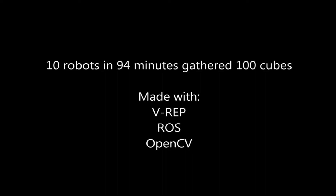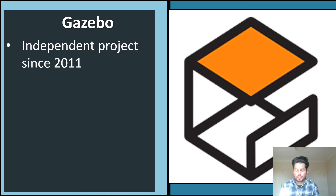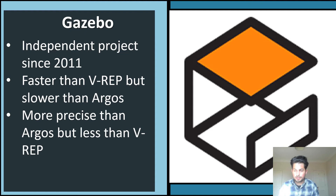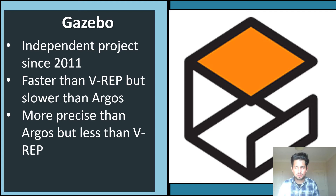The next simulator is Gazebo, an independent project developing since 2011. It is faster than VREP, a bit slower than Argos — somewhere in between — and more precise than Argos but less than VREP. This project was an extension of Player and Stage. Many people use it in Evolutionary Robotics but not much in Swarm Robotics. From what I've been told, the documentation is not as good as VREP, but there is some documentation. Installing new dependencies can get a little more difficult.